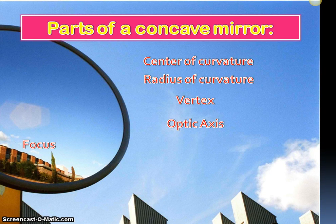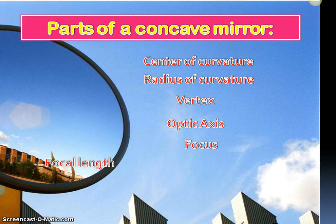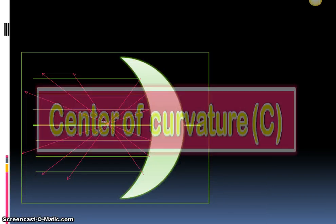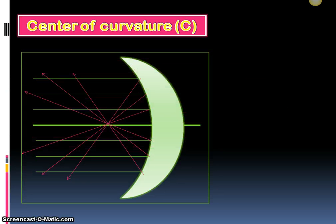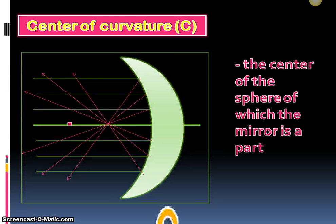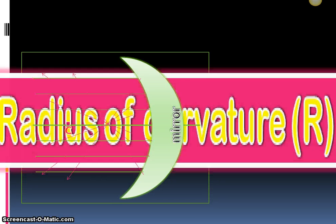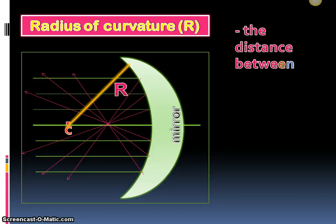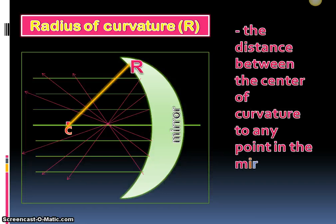optic axis, focus, and focal length. Center of curvature: it is the center of the sphere of which the mirror is a part. Radius of curvature: it is the distance between the center of curvature to any point of the mirror surface.